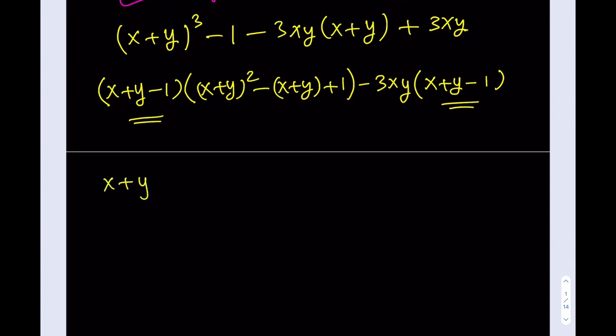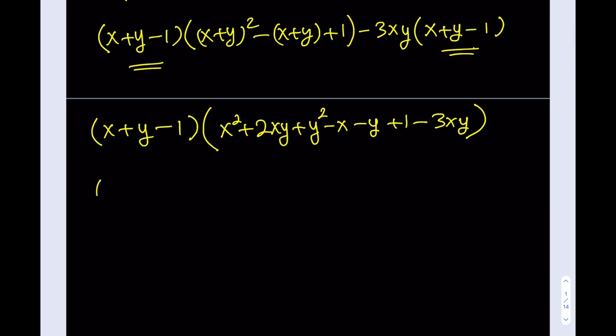So I have x plus y minus 1, multiply by... Now I can go ahead and expand this. x plus y squared. I was going to expand it, right? So it's going to look like x squared plus 2xy plus y squared minus x minus y plus 1. So this is just the first part. Since I took this out, we're going to have minus 3xy. That's going to be my other factor, and let's go ahead and simplify that.